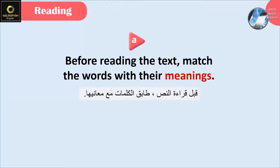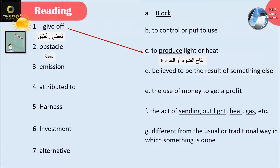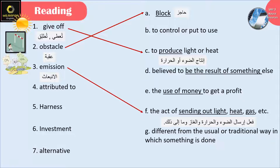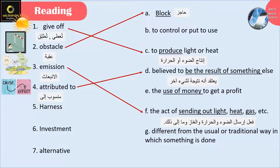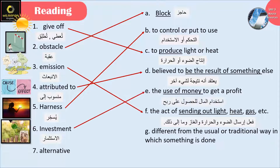Now let's answer question A. Before reading the text, match the words with their meanings. To produce light or heat. Obstacle: block. Emission: the act of sending out light, heat, gas, etc. Attributed to: believed to be the result of something else. Harness: to control or put to use. Investment: the use of money to get a profit.